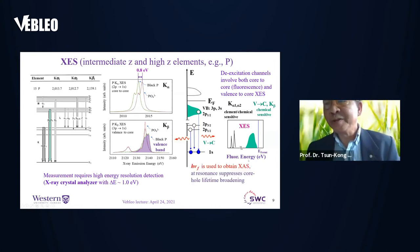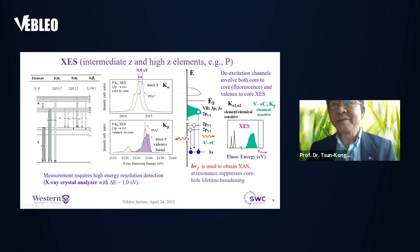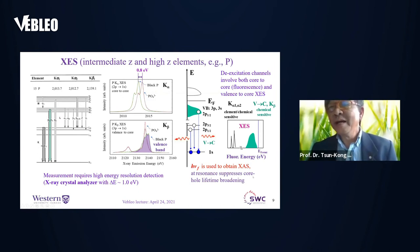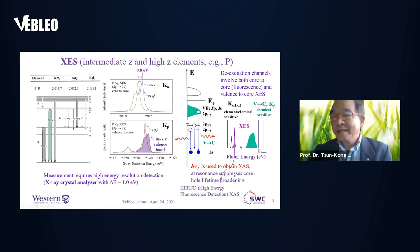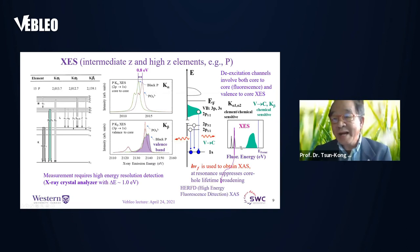As I mentioned, X-ray absorption can be measured by tracking the intensity of the fluorescence. The intensity of fluorescence enhances at resonance and also suppresses the core lifetime broadening. So if we can use a narrow energy window to detect the fluorescence X-ray — say the Kα₁ — with a very narrow energy window using a crystal analyzer, we will be able to record the X-ray absorption spectrum with very high energy resolution, and there are benefits for doing that as will become clear.